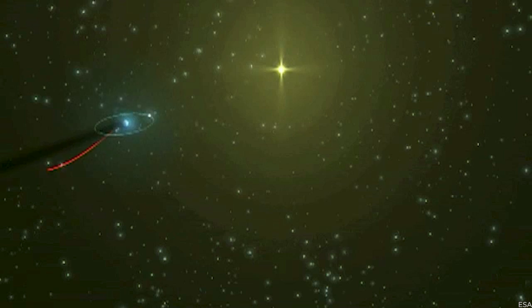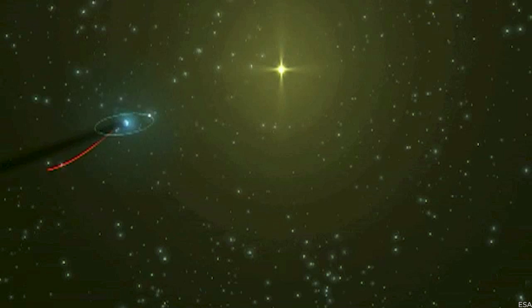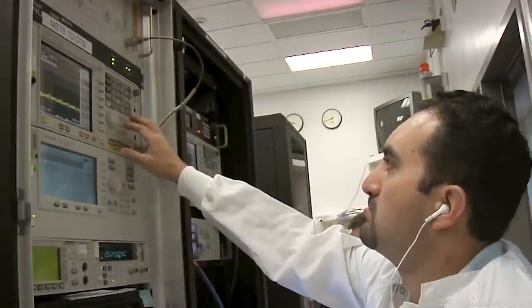Cosmic variance also predicts the expected size of these random fluctuations. And guess what? The observed fluctuations are larger than anticipated. They're not off the charts massive, but they're significant enough to make scientists raise their eyebrows and ponder if there's something more going on here.